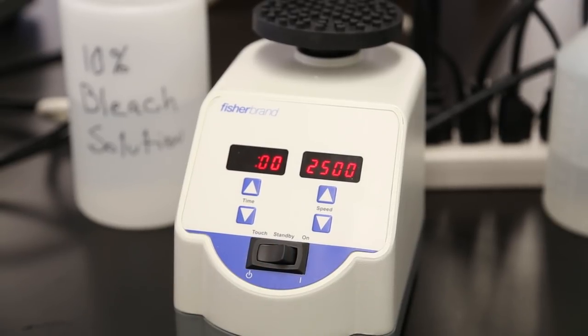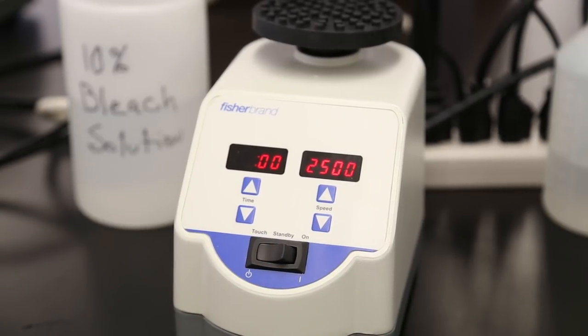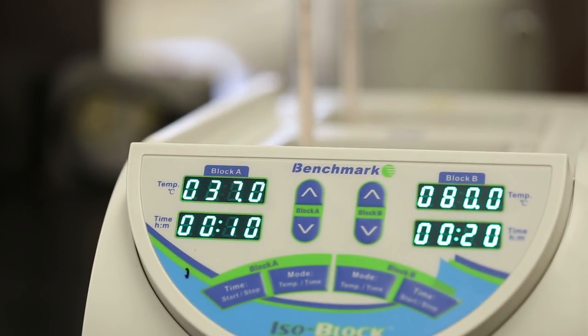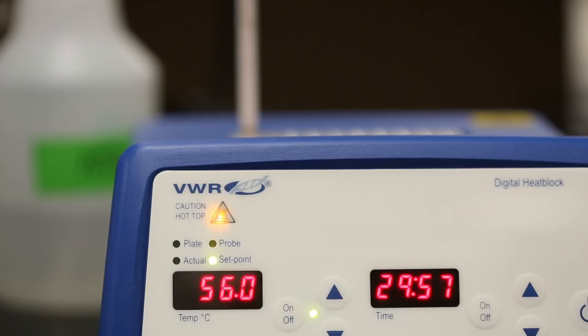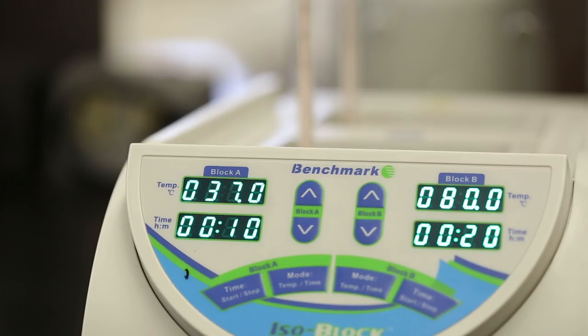Now, make sure that the vortex is plugged in and turned on. Check the three heaters. They should read 37 degrees, 80 degrees, and 56 degrees Celsius respectively. If they do not, they may still be heating.